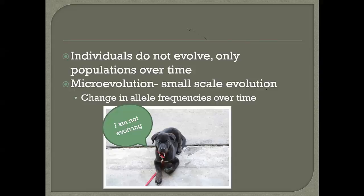Micro-evolution is small-scale evolution. We're looking at changes in allele frequencies within a population — a group of organisms of the same species living in a geographic area. A population is a group of the same species living in an area. When we look at a change in their allele frequencies over time, that is micro-evolution.